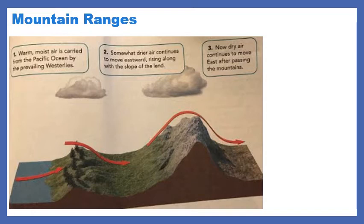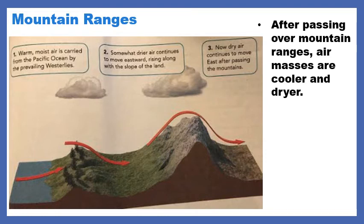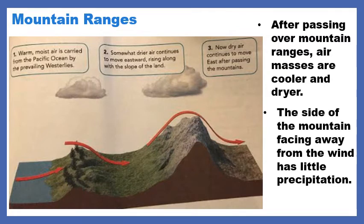That dry air continues onto the land after passing the mountain. So the moral of the story: after passing over mountain ranges, air masses are cooler and drier. If you are on the side of the mountain facing away from the wind, you will have very little rain or precipitation.